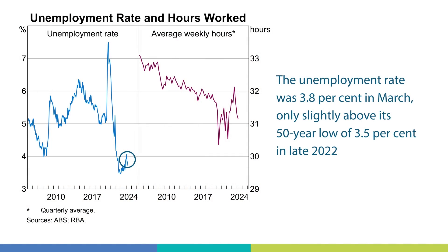I want to turn to another important economic indicator now — the labour market. One of the RBA's objectives is full employment, meaning achieving the maximum level of employment that's consistent with low and stable inflation. Australia's labour market still remains tight relative to full employment, meaning that people who want a job can generally find one without having to search for too long. Labour market conditions have continued to ease but at a more gradual pace than previously anticipated. The unemployment rate was 3.8% in March, only slightly above its 50-year low of 3.5% in late 2022.